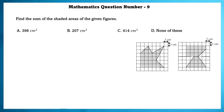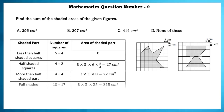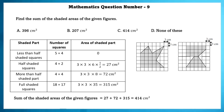Mathematics question number 9. Find the sum of the shaded areas of the given figure. There are 9 less-than-half shaded squares, contributing 0 area. There are 6 half-shaded squares giving 27 cm square. There are 8 more-than-half shaded parts giving 72 cm square. There are 18 plus 17 full shaded squares giving 315 cm square. Adding all shaded regions gives 414 cm square.